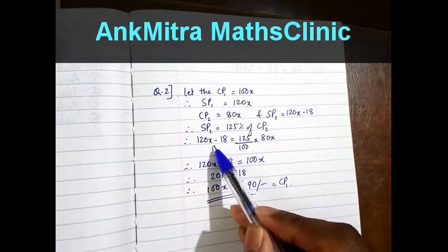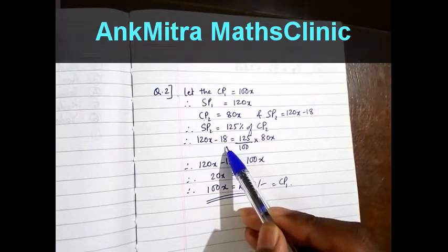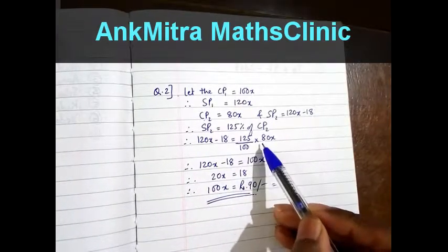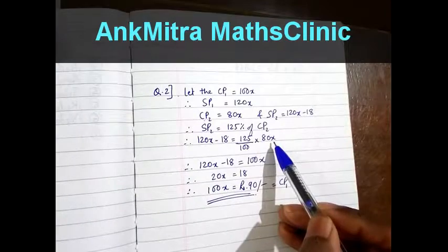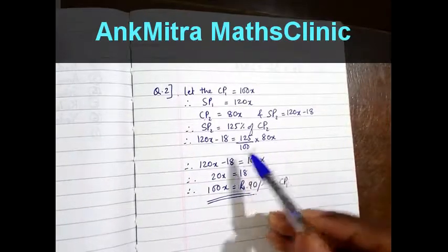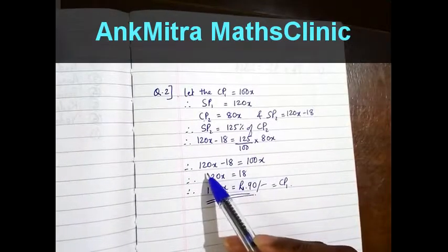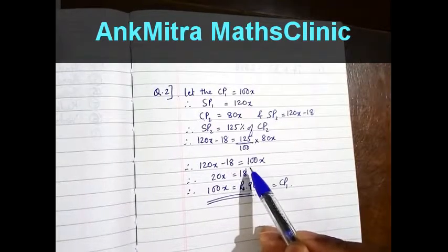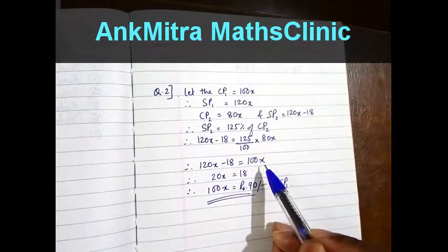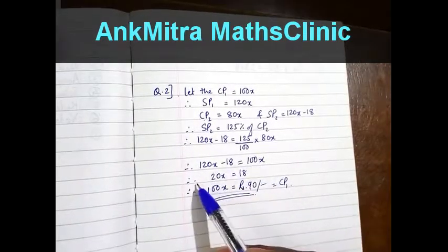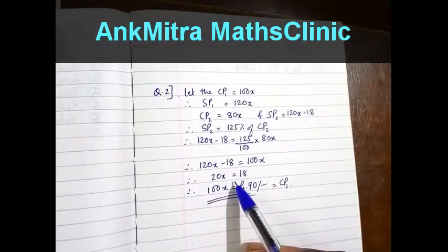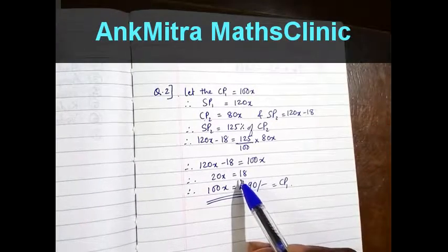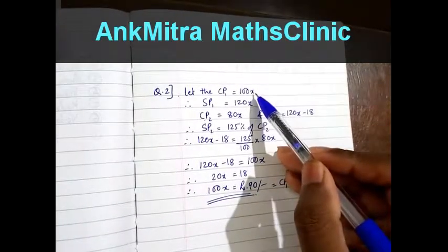So 120x minus 18 is equal to (125/100) multiplied by 80x. Simplifying this, we get 120x minus 18 is equal to 100x. Further simplifying, we get 20x is equal to 18.